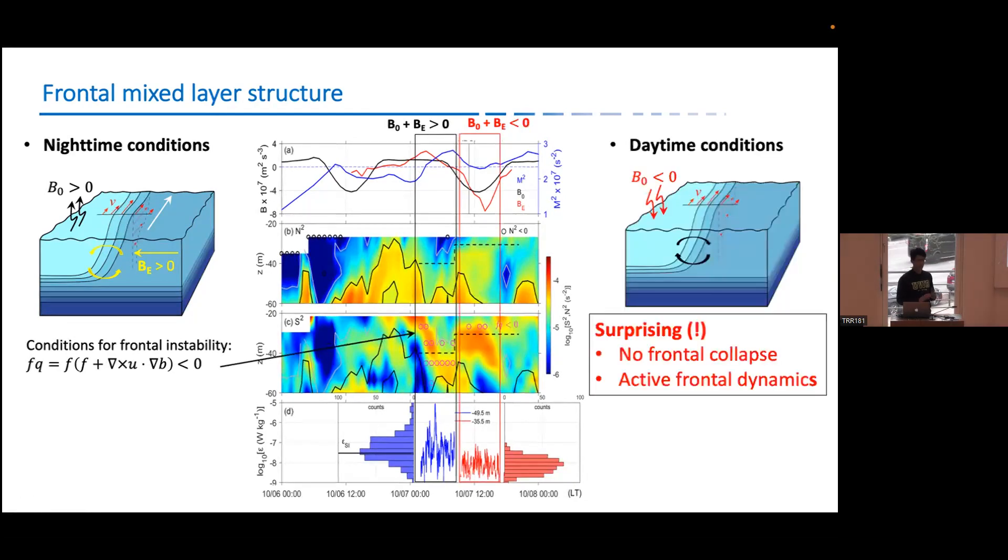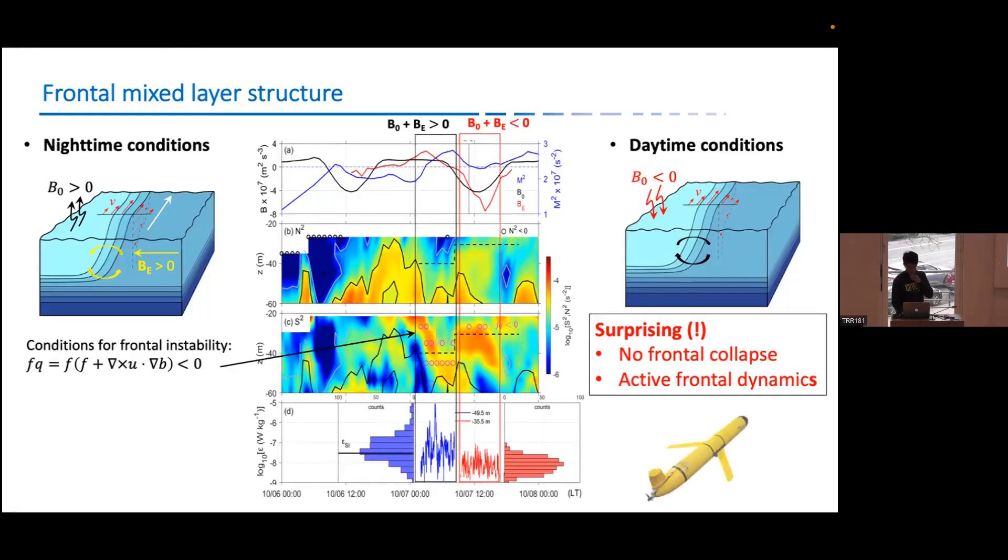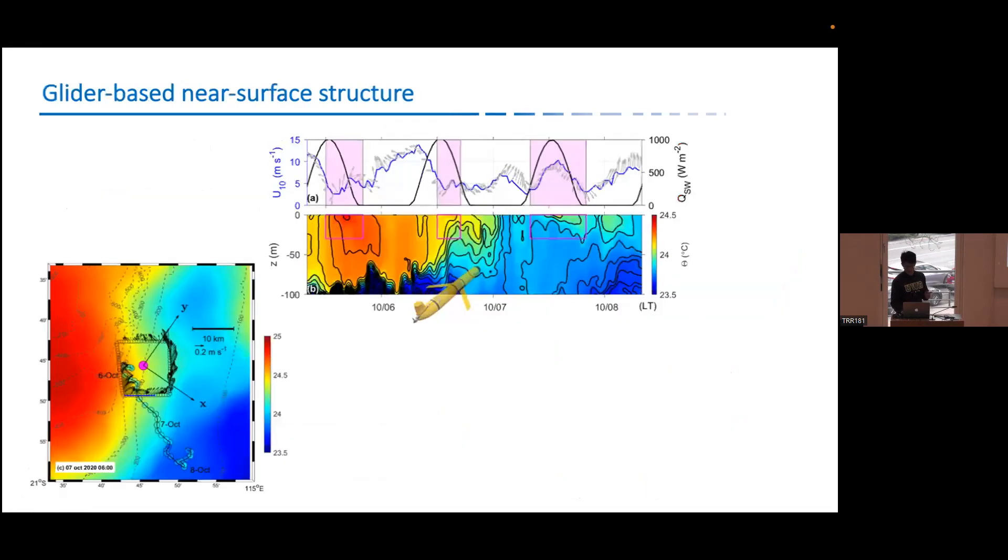However, no evidence of frontal lapse or frontal collapse happen. This is very surprising and we think about that for months why that's happened. Luckily, we have another data set which is from the glider observation. So if we have a look at the glider data, one can see. I need to mention that the front effect here is this happened in the noon 7th of October. So we can see the noon of October is here.